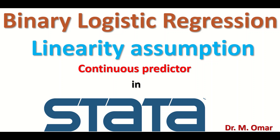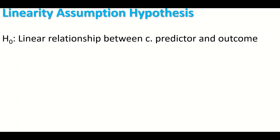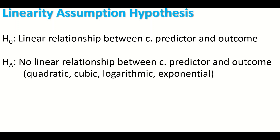To check and examine the continuous predictor and to see whether it satisfies the assumption for performing binary logistic regression, a hypothesis has to be generated. The null hypothesis will state that there is a linear relationship between the continuous predictor and the outcome.